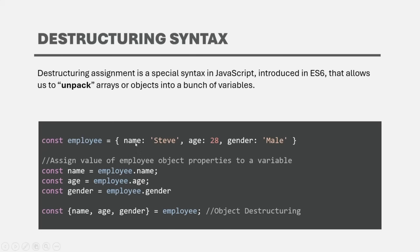To assign the property values of this employee object to variables, we are creating a variable, accessing the property value using dot notation, and assigning it to that variable. So here we are creating three variables — name, age, and gender — and assigning them with the property values from the employee object. Instead of doing it like this, we can use object destructuring syntax.